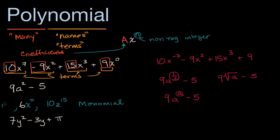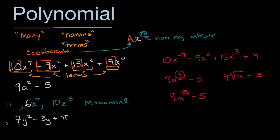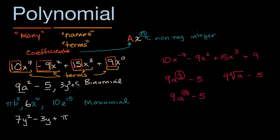Your coefficient could be pi. So we could write pi times b to the fifth power. Any of these would be monomials. So what's a binomial? A binomial is where you have two terms. Mono for one — one term. Binomial — you have two terms. So nine a squared minus five right over here is a binomial. You have two terms. And all of these are polynomials, but these are subclassifications. Another example of a binomial would be 3y to the third plus 5y. You have two terms that have this form.